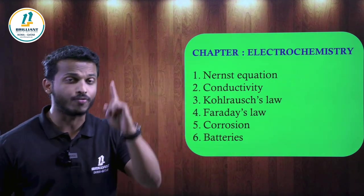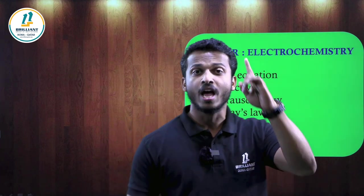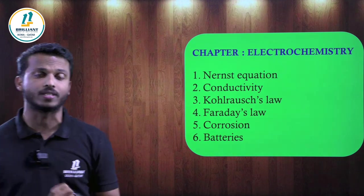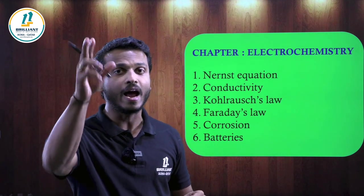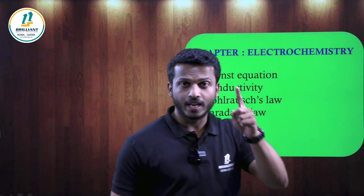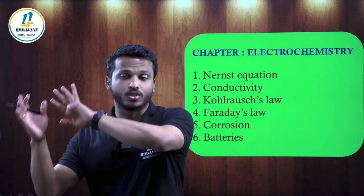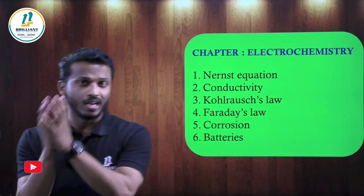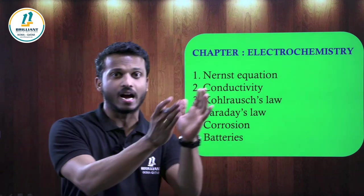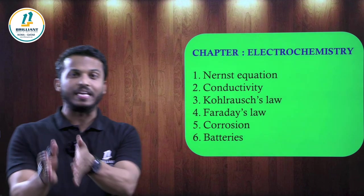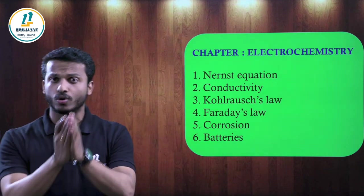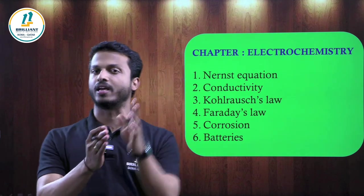The graph for the Debye-Hückel-Onsager equation is important — they may ask what is on the x-axis, y-axis, and what the slope is. Kohlrausch's law related numericals and its definition should also be studied. Regarding Faraday's laws: the first law is W = Zit, and the second law is W₁/E₁ = W₂/E₂. Study Faraday's first and second law — definitions and numericals are important.